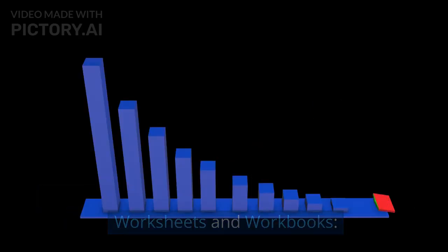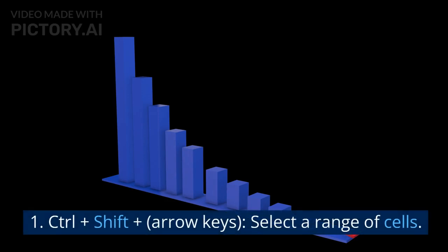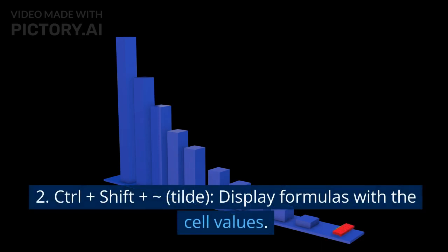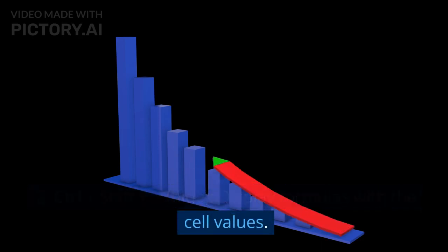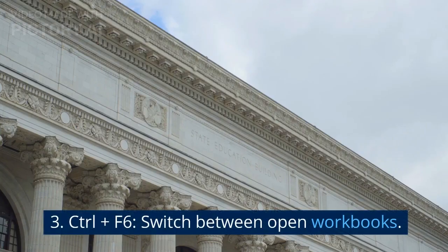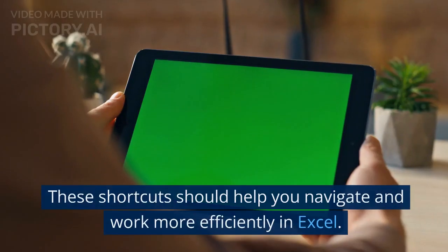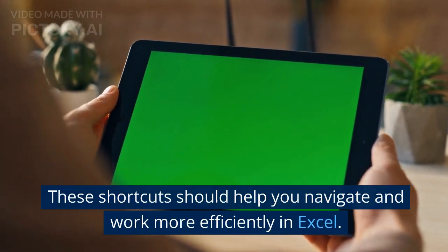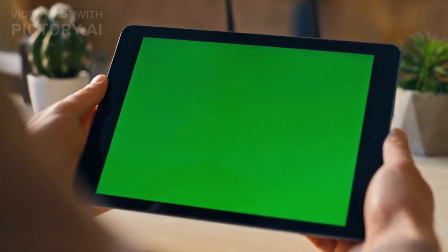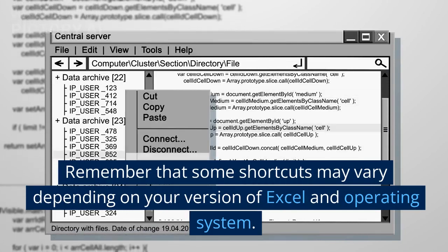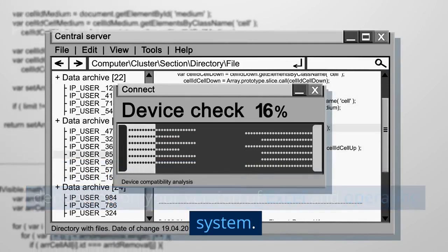Worksheets and Workbooks. 1. CTRL plus Shift plus arrow keys: select a range of cells. 2. CTRL plus Shift plus tilde: display formulas with the cell values. 3. CTRL plus F6: switch between open workbooks. 4. CTRL plus Tab: cycle through open workbooks. These shortcuts should help you navigate and work more efficiently in Excel. Remember that some shortcuts may vary depending on your version of Excel and operating system.